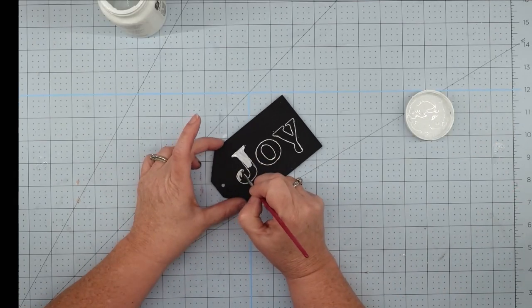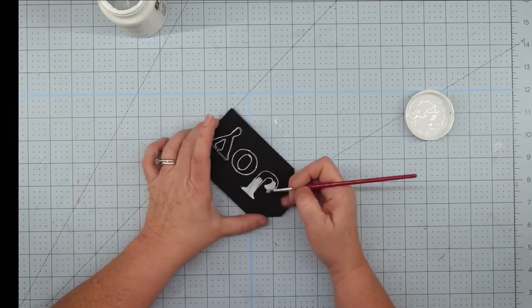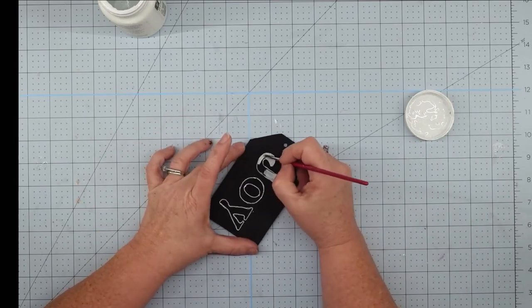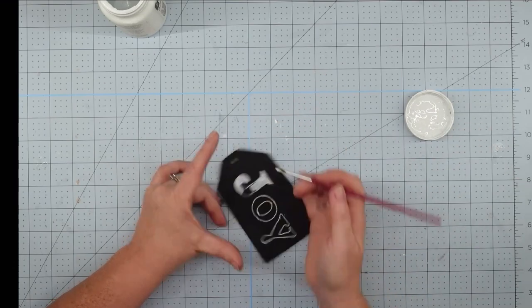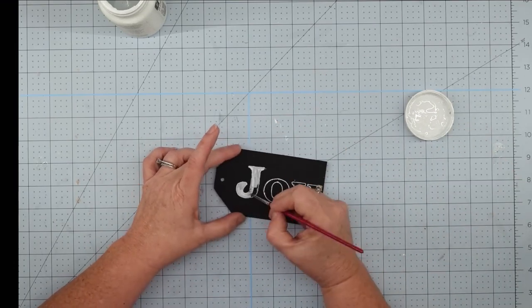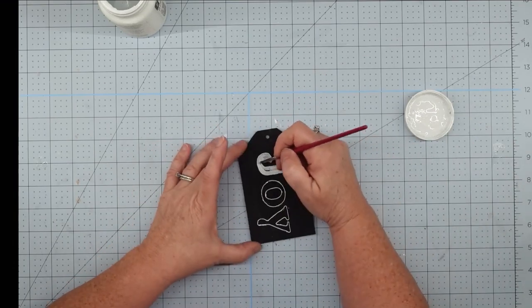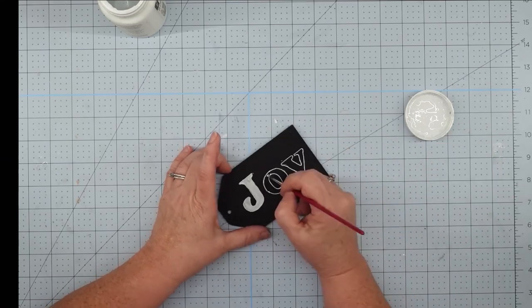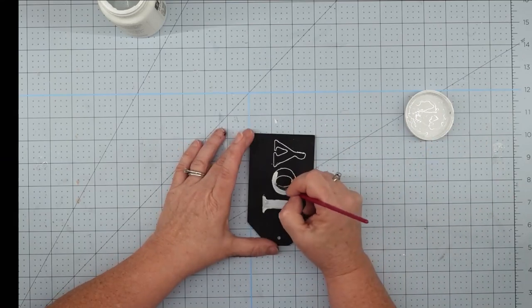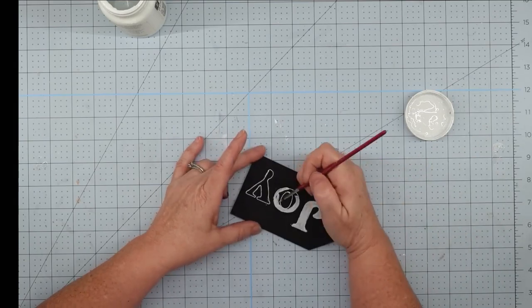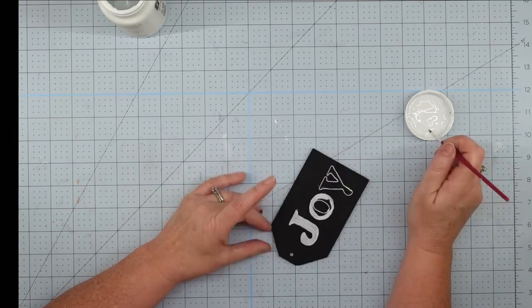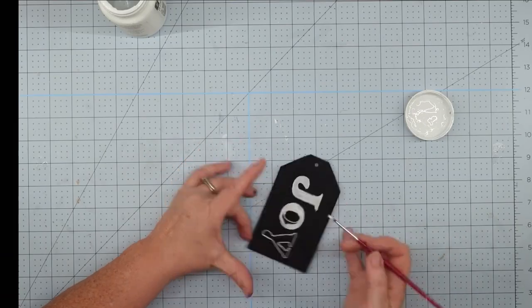So once I got it outlined, I just grabbed my Waverly chalk paint. I had just a little bit left in the bottle. I added some water to kind of thin it out and then I used a small brush and just painted it in and this worked perfectly. There wasn't a lot in there, but it worked for what I needed it to do. Once I got everything painted in, I set it aside and let it dry.